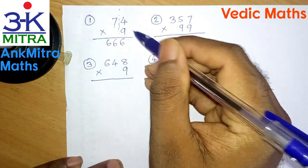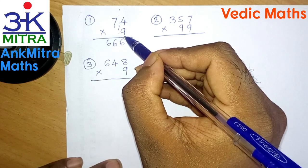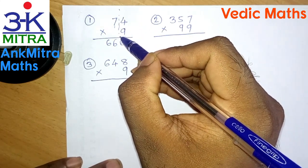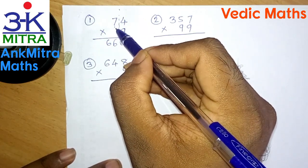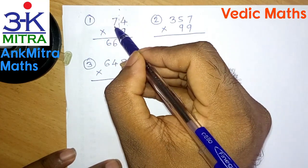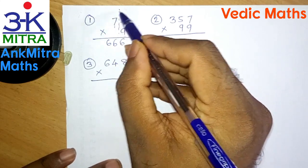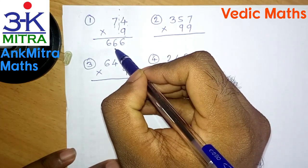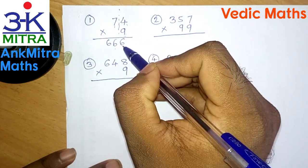Let's look at that once again. We had 74 multiplied by 9. There was a single digit in the multiplier, so we drew a partition line to the left of that one digit, leaving one digit on the left of the multiplicand. We took the entire multiplicand 74 and subtracted one more than that left digit — so we subtracted 8 from 74 and got 66. Then for the final step we did 10 minus 4, giving us 6.